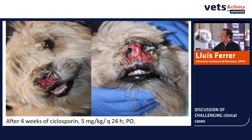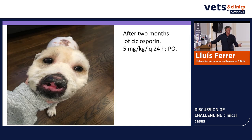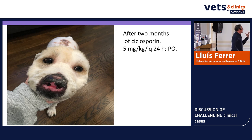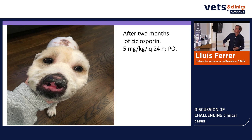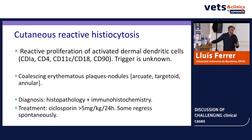Treatment was started with cyclosporine at the regular dose of 5 mg/kg, and the dog improved clearly and very quickly — the lesion closed. Even the owners could not believe it: they said 'this will remain forever,' and I said no, they respond pretty well to cyclosporine. This is the image two months later.